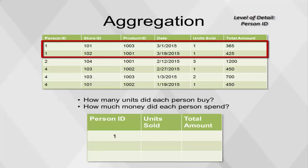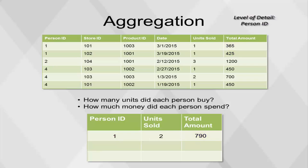Starting with person ID 1, we see that there were 1 plus 1 equals 2 units sold, and 365 plus 425 equals $790 spent. These values are populated in the resulting table. Similar calculations are done for every person ID in the original table.